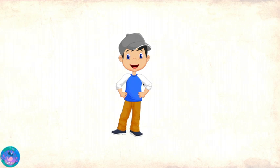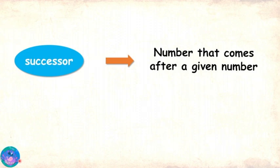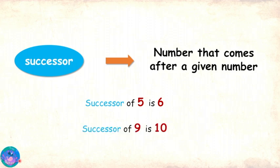A successor? What is that? Successor is a number that comes after a given number. Let us see some examples. Can you tell me what comes after five? Six. So, the successor of five is six. And what comes after nine? Ten. So, the successor of nine is ten.